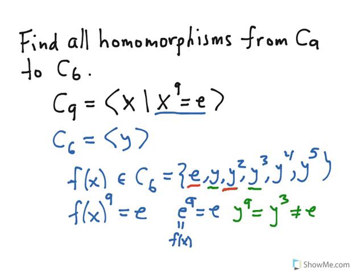Y to the 4th to the 9th is Y to the 36th. That is a multiple of 6, so we're good to go. And Y to the 5th to the 9th, that's Y to the 45th, which is not a multiple of 6. And so, in total, we're going to get three possibilities for where to send X. And each one will generate a different homomorphism from C₉ to C₆. So we'll have three homomorphisms, one that sends X to E, one that sends X to Y squared, and one that sends X to Y to the 4th.